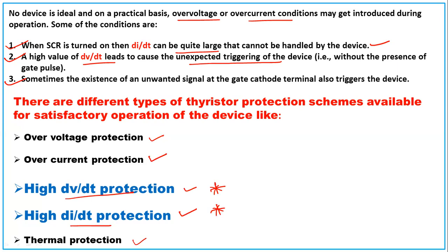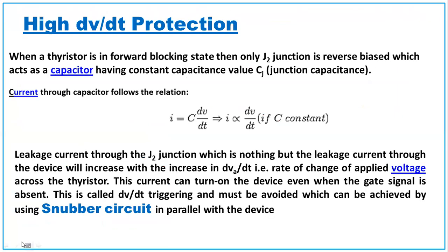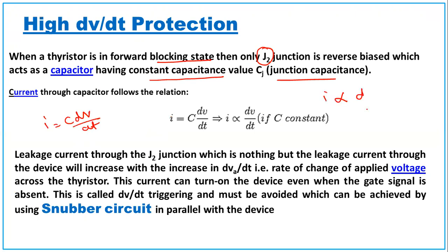Now let's see the theory behind dv/dt protection. When the thyristor is in the forward blocking state, junction J2 is reverse biased. Junction J2 acts as a capacitor with a constant capacitance value Cj — we call it junction capacitance. The current through a capacitor is i = C × dv/dt, meaning current is proportional to dv/dt since capacitance is constant.